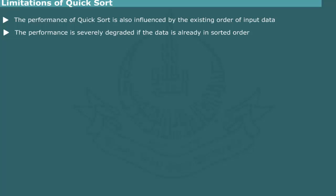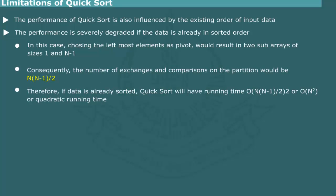However, as noted before, the performance of quicksort is also influenced by the existing order of input data. The worst case occurs when the array is already sorted. In this case, if the leftmost element is selected as to pivot, the array will split into two arrays of sizes 1 and n minus 1. Thus, altogether, 1 plus 2 plus up to n minus 1 is equal to n into n minus 1 by 2 comparisons and exchanges would be performed. As a result, the running time would be O(n into n minus 1 by 2), or O(n square). Thus, the quicksort would perform as poorly as any quadratic sort algorithm.